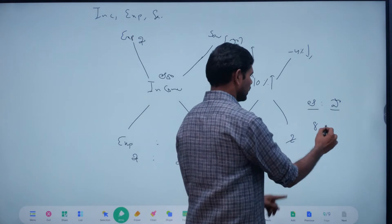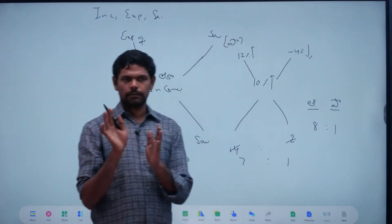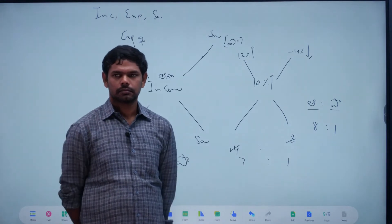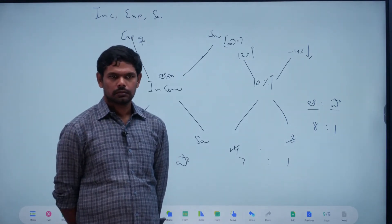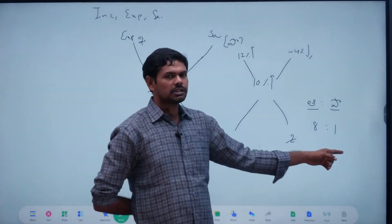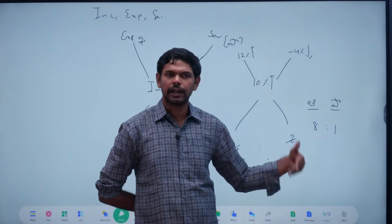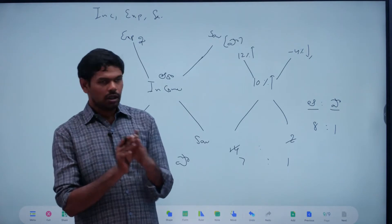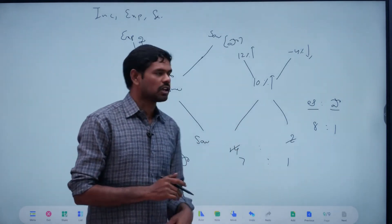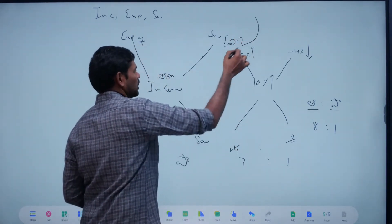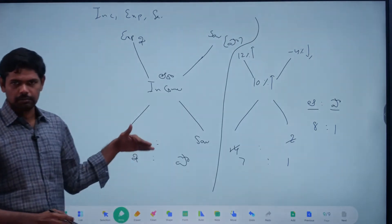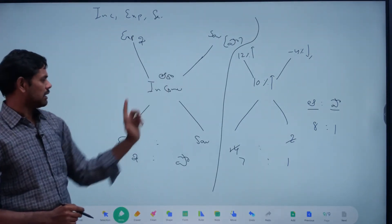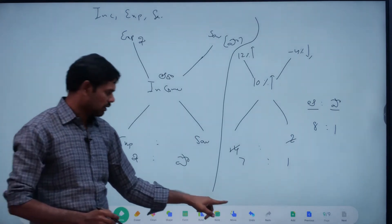80 is to 1 — this is confused. What is the saving percentage? What is the problem? 1 by 8, 1 by 8 is 12.5% — that is confused, right? I have to understand that this case will be confused. Income is expenditure savings — here is expenditure to savings.